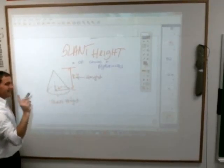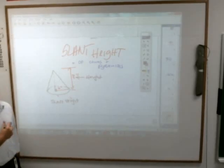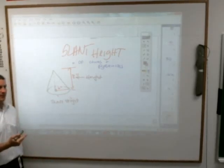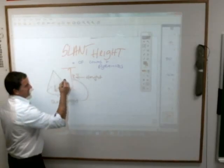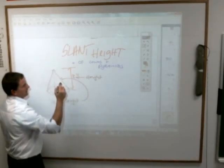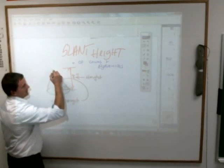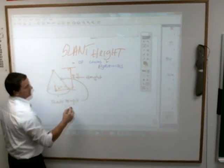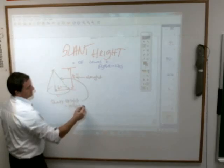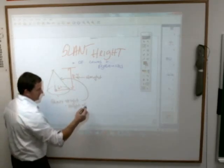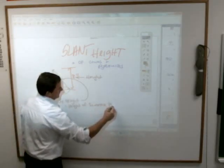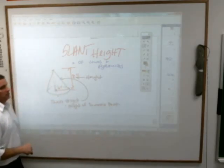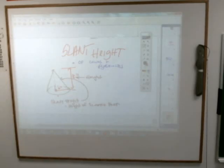And just like the slant height says, it is the height of the slanted part. In other words, this, it's the distance from here to here. This is the slant height. The height of the slanted part. I can't think of any other way to say it.